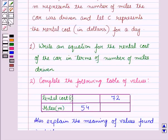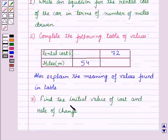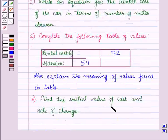In the first part, write an equation for the rental cost of the car in terms of number of miles driven. In the second part, complete the following table of values and explain the meaning of values found in the table. And in the third part, find the initial value of cost and rate of change.